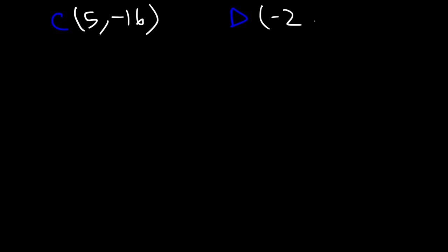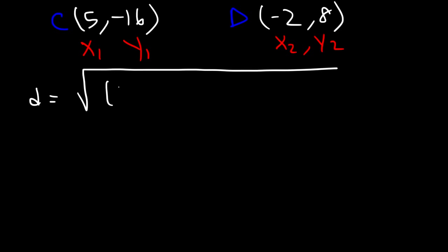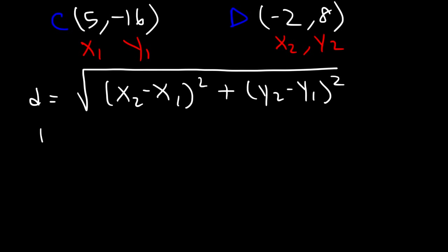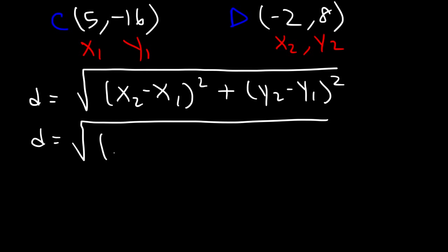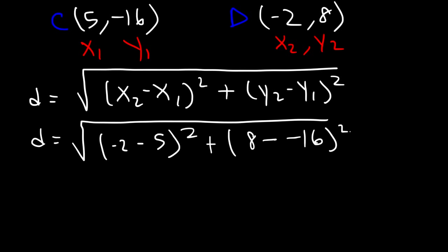For practice, let's try another example. Let's say point C has coordinates (5, -16) and point D has coordinates (-2, 8). Use the distance formula to calculate the distance between points C and D. We'll call C: x1, y1 and D: x2, y2. So D equals the square root of (x2 minus x1) squared plus (y2 minus y1) squared. Here x2 is -2 and x1 is positive 5; y2 is 8 and y1 is -16.